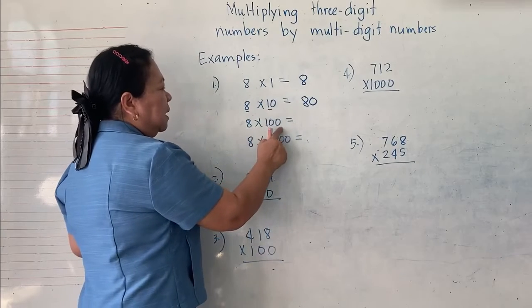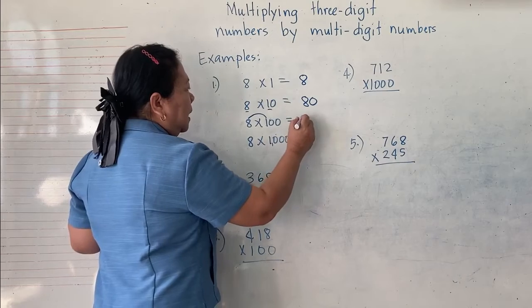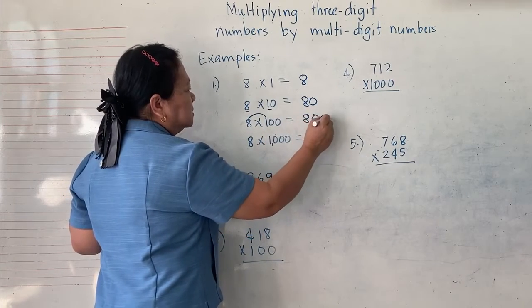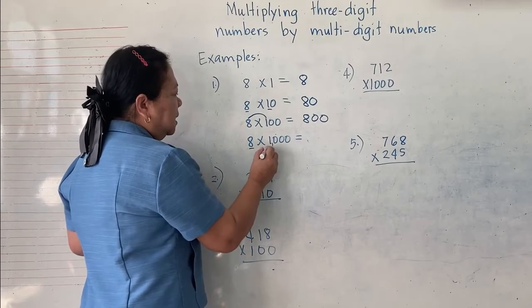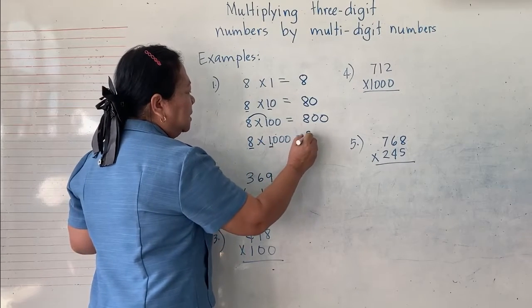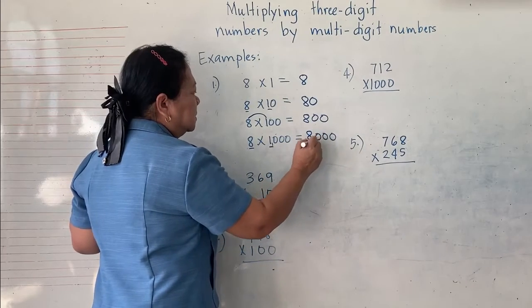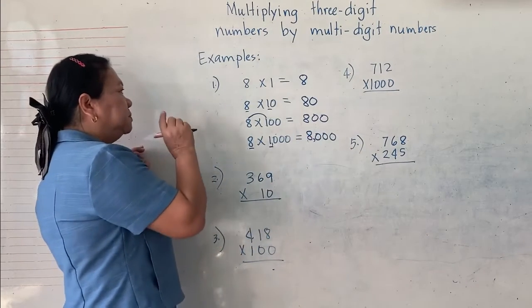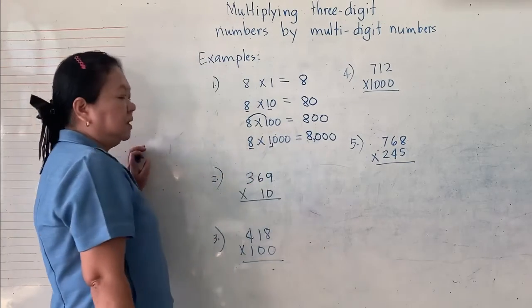And then, 8 times 100. So, just like we've been playing 8 times 1, again 8 and write the two zeros. And then here, 8 times 1,000. 8 times 1 is 8. And then, 1, 2, 3 zeros. So, therefore, 8 times 1,000 is equal to 8,000.